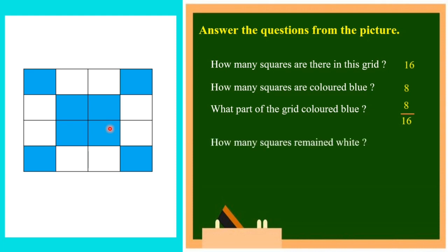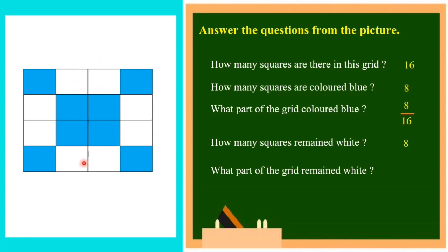Next question: how many squares remain white? Counting 1 through 8 — so totally 8 squares remain white. What part of the grid remained white? Totally 16 squares are there, and out of 16 squares, 8 parts remain white. So we can say 8 parts out of 16 equal parts, that is 8 by 16. So here 8 by 16 parts blue and 8 by 16 parts white.